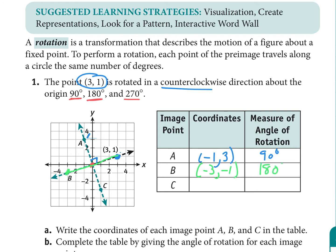That was a 180-degree rotation — a straight line is 180 degrees. Then point C, rotated 90 plus 180 plus another 90 — a total of 270 degrees — has coordinates x = 1, y = negative 3. If you look at all the rotation coordinates, they all contain the same numbers: threes and ones. It's just that sometimes x and y are swapped or negatives are introduced.